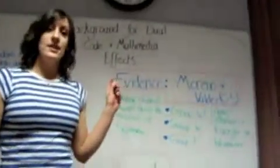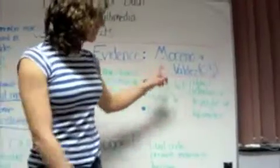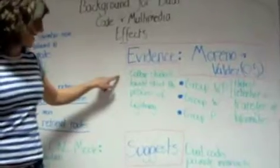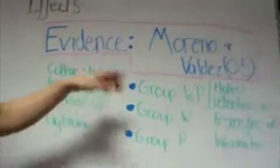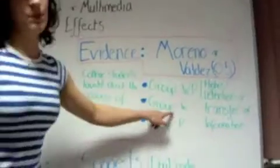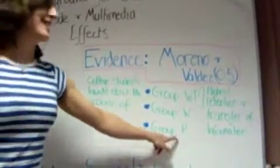Evidence to support this theory is by Moreno and Valdez 05. They conducted a study on college students which taught them the process of lightning, which had three different groups. The first group was taught with words and pictures, the second group was taught with just words, and the third group was taught with just pictures.